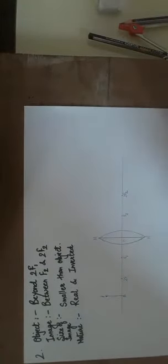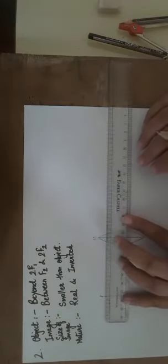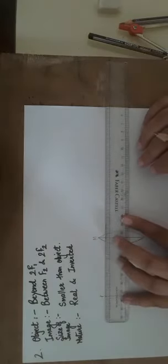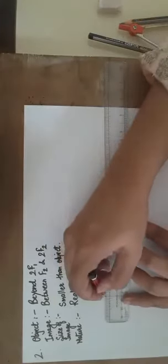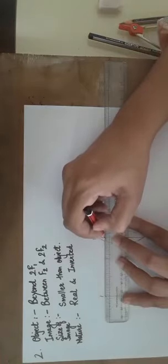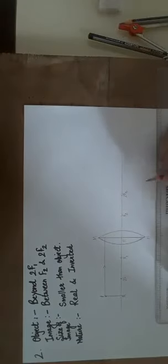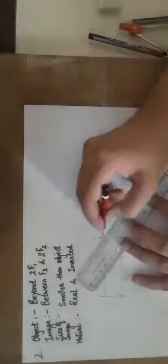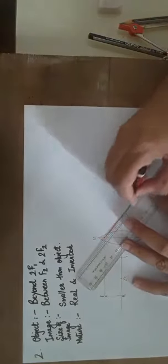Out of the three rules that we have studied, we will make use of any two rules and we will try to find out the position of the image. Let us first draw the incident ray. I am using the first rule. Incident ray is parallel to the principal axis. If it is parallel to the principal axis, it will pass through the focus. I am making it pass through F2. This is the refracted ray.